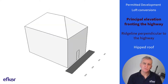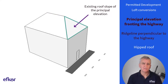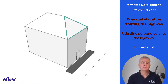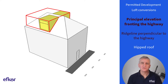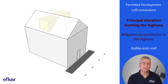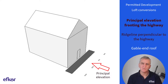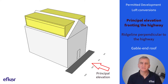Now let's consider a hipped roof whose ridge line is perpendicular to the highway. There is an existing roof slope of the principal elevation which fronts the highway, so no extensions are allowed beyond the plane of this slope. Dormer windows can be built on the other three roof slopes. In fact, a more practical solution might be to create one large dormer roof, ensuring it is lower than the original roof height. If the house was originally built with gable ends, there is no roof slope of the principal elevation fronting the highway, meaning there is no condition excluding extensions beyond the plane of the roof slope. Two full-width dormers can be added, or the entire pitched roof can be replaced by a mansard-type roof.